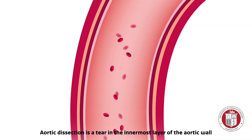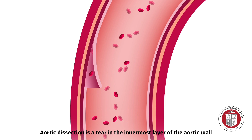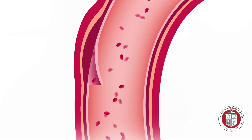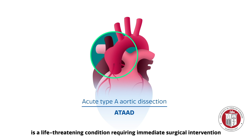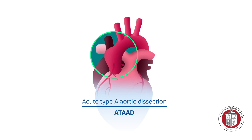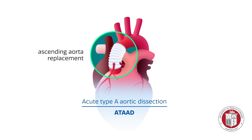Aortic dissection is a tear in the innermost layer of the aortic wall. Acute type A aortic dissection, or ATAAD, is a life-threatening condition requiring immediate surgical intervention, which is replacement of the ascending aorta.